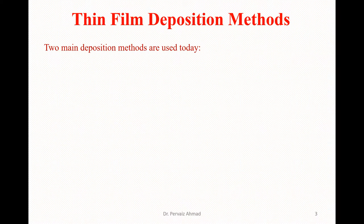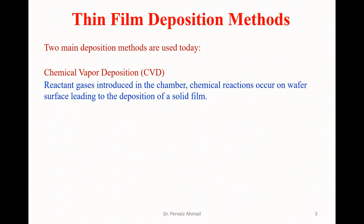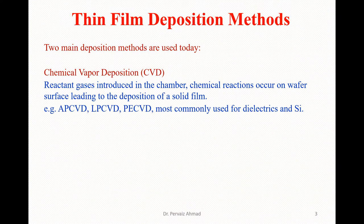There are two basic types of deposition for thin films. The first is Chemical Vapor Deposition, or CVD. In this technique, reacting gases are introduced into the chamber, and as a result chemical reactions occur on the vapor surface leading to deposition of a solid film. Examples include Atmospheric Pressure CVD (APCVD), Low Pressure CVD (LPCVD), and Plasma Enhanced CVD (PECVD), which are most commonly used for dielectrics and silicon thin films.